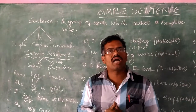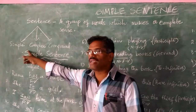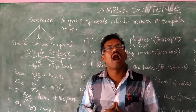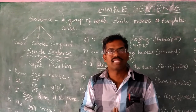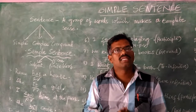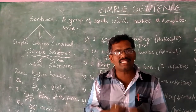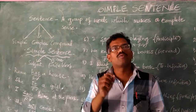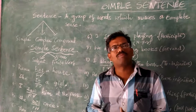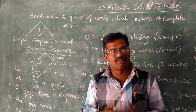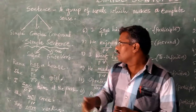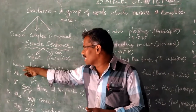In this video, we are concerned with simple sentence. Let us know the meaning of simple sentence and how to identify it. A simple sentence is a sentence which has a subject and one finite verb. A finite verb is a verb which can be changed into other tenses. Look at these examples.